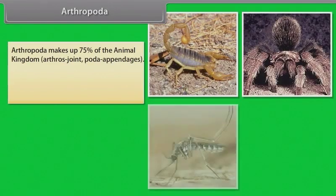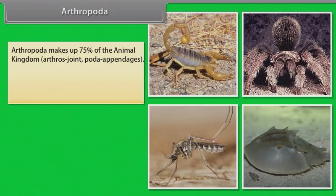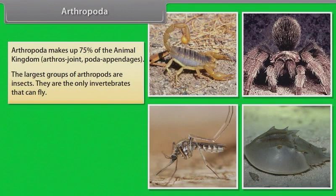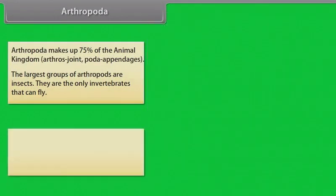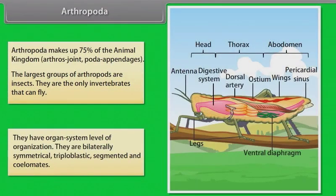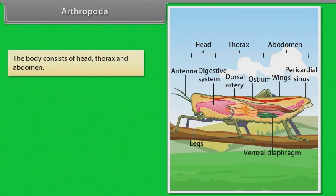Arthropoda makes up 75% of the animal kingdom. 'Arthros' means joint and 'poda' means appendages. The largest group of arthropods are insects — the only invertebrates that can fly. They have organ system level of organization, are bilaterally symmetrical, triploblastic, segmented and coelomate. The body consists of head, thorax and abdomen.